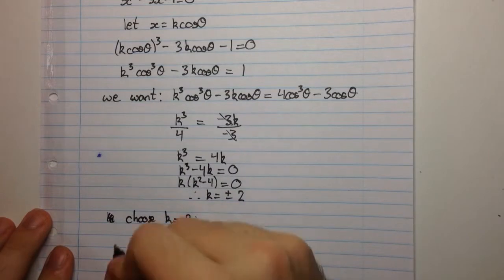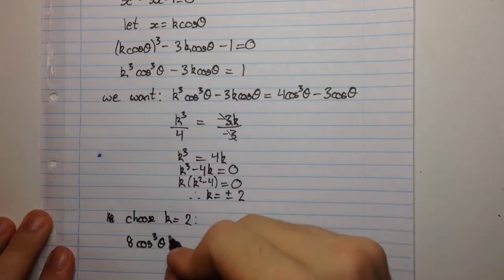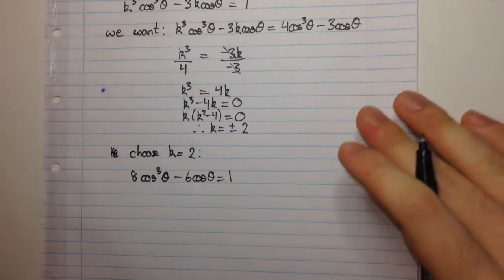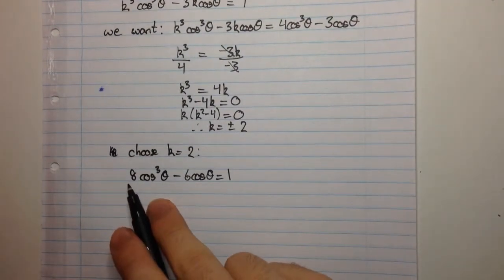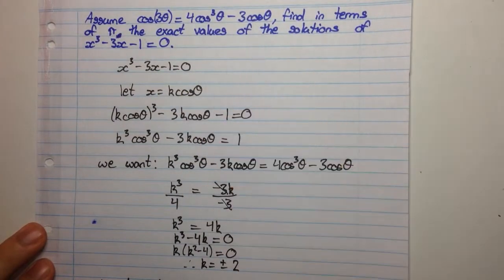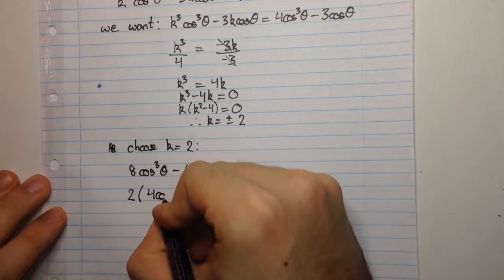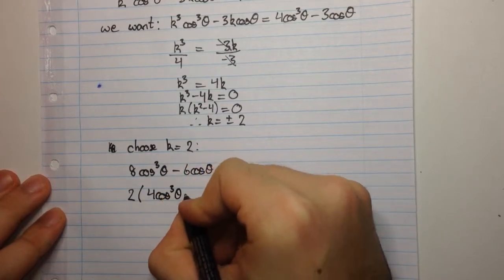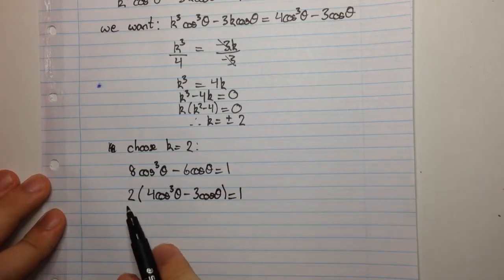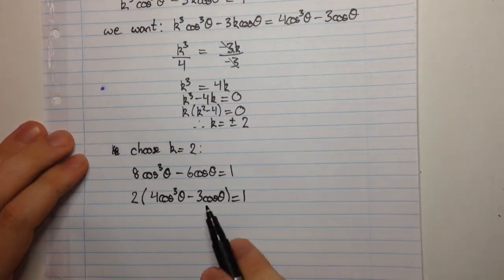we're going to have 2³, which is 8cos³θ, minus 3 times 2, which is 6cosθ, is equal to 1. Now we can factor out a 2 from here. So when we factor out a 2, we're going to get 4cos³θ minus 3cosθ is equal to 1. And now you'll see that we can apply this given fact here into this question.